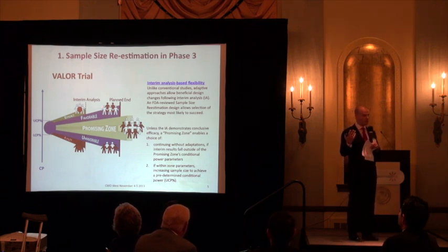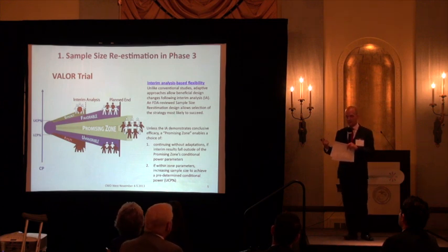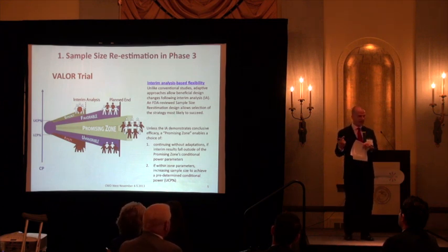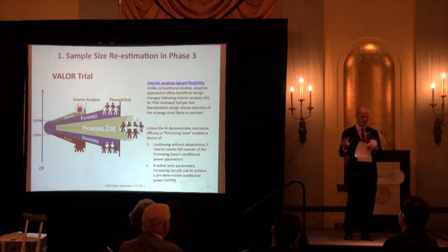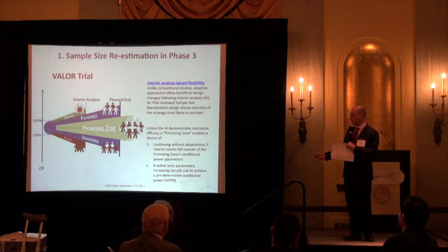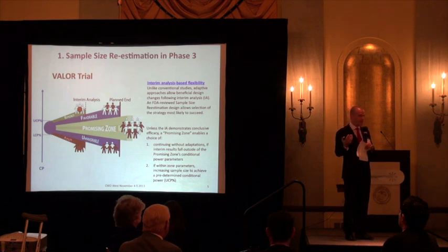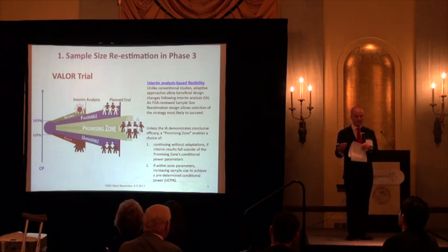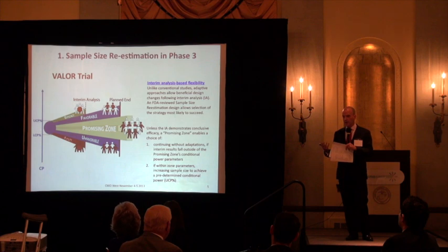At that point the DSMB could make one of four decisions. They could have stopped the trial for efficacy — very unlikely in a relapsed refractory AML setting, and it didn't happen. They could have stopped the trial for futility. We didn't think that would happen; we thought we had an active drug without a toxicity profile that would make it futile.